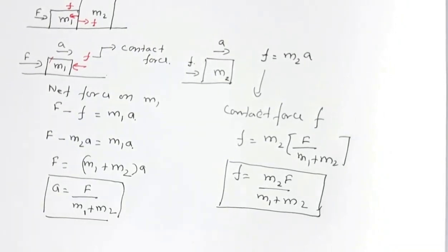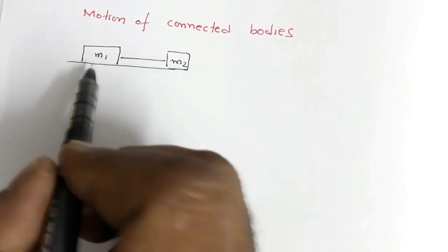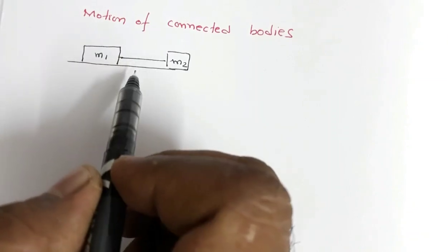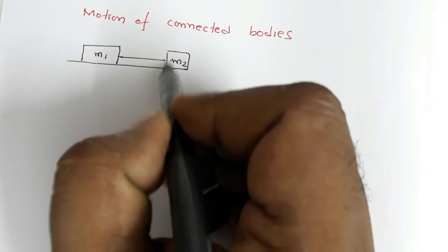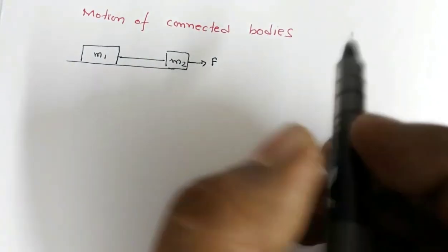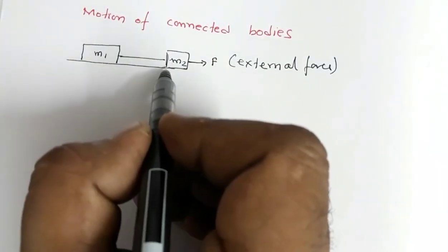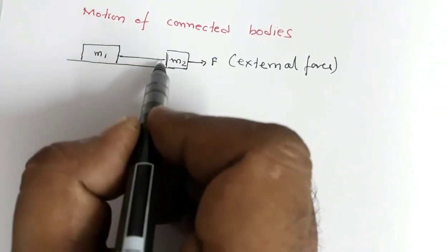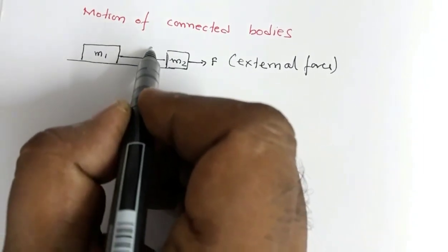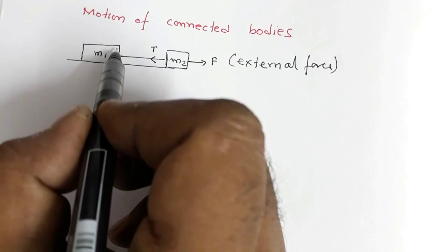Next let us see the motion of connected bodies. We have two blocks of mass m1 and m2 placed on a horizontal smooth surface connected by a string. Block m2 is acted upon by external force F. The string will pull m2 in one direction — the force exerted by the string is called tension T.